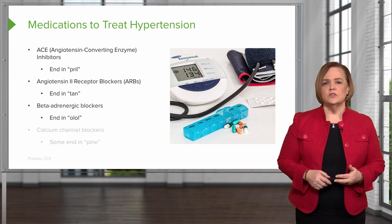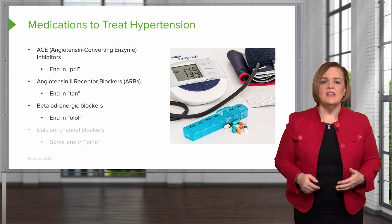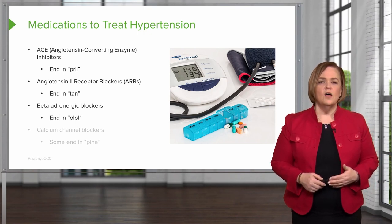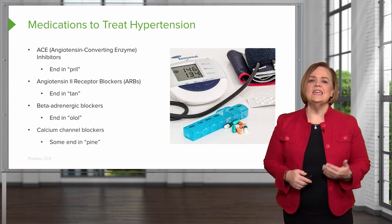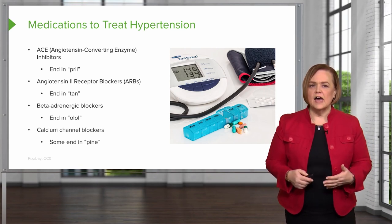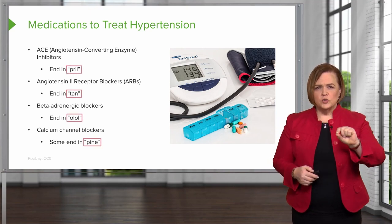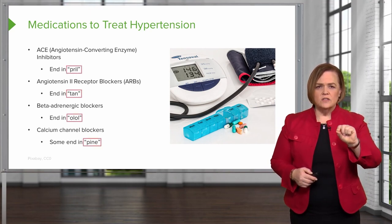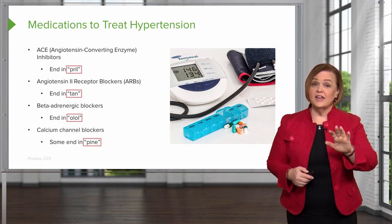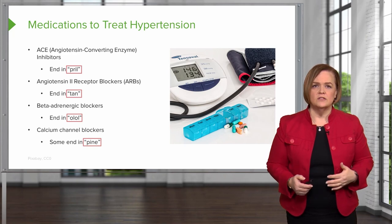Beta adrenergic blockers are also called beta blockers for short and they end in -OLOL, O-L-O-L. Calcium channel blockers — some of them end in -PINE, P-I-N-E. Make sure you circle those endings in your notes; that's going to be very helpful as you're memorizing generic drug names and which family they belong to.